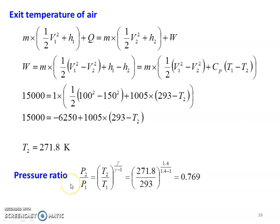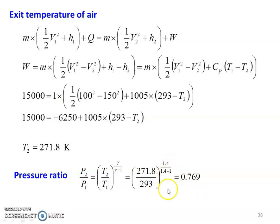Now, for the pressure ratio under adiabatic process: P2/P1 = (T2/T1)^(γ/(γ−1)) = (271.8/293)^(1.4/0.4) = 0.769. So the pressure ratio of the blower is equal to 0.769.